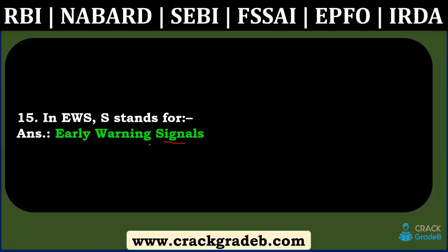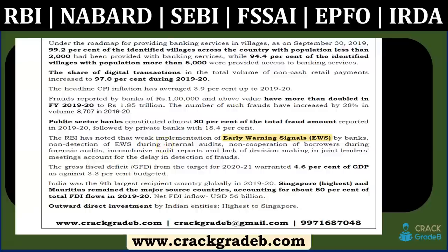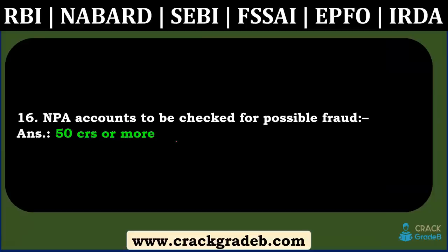External debt as of 31st March 2020 was in the RBI External Sector Report and in the RBI exam report. The Fraud Monitoring Return is taken from an RBI circular. EWS — Early Warning Signal — was also in the news and covered in our report section under the RBI Annual Report. The RBI has noted weak implementation of Early Warning Signals by banks and non-detection of frauds, which we have clearly highlighted in our content.